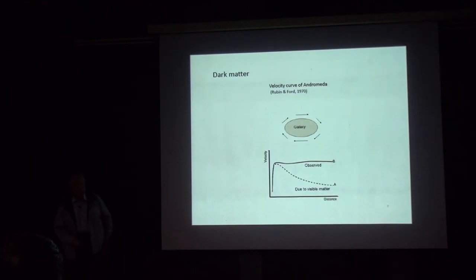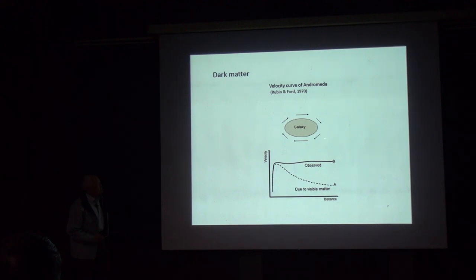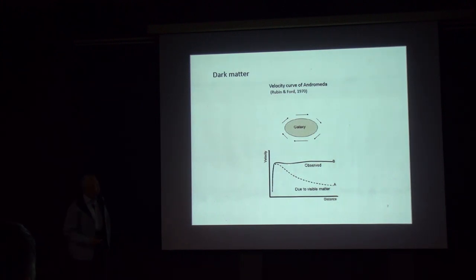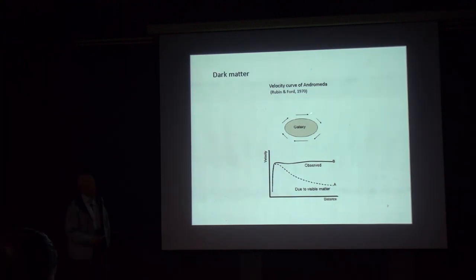There is also the mystery of dark matter. Here is a galaxy rotating, and you can measure the velocity of dust particles around it. The velocity maintains a very high value far out from the galaxy. But according to the galaxy's visible mass, the velocity should follow a curve that drops off. It doesn't. People say this difference must be made up by some dark matter that we cannot see.